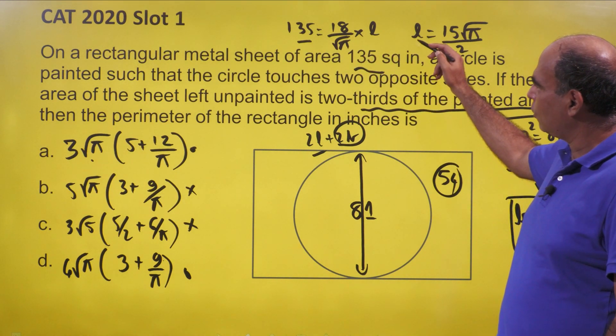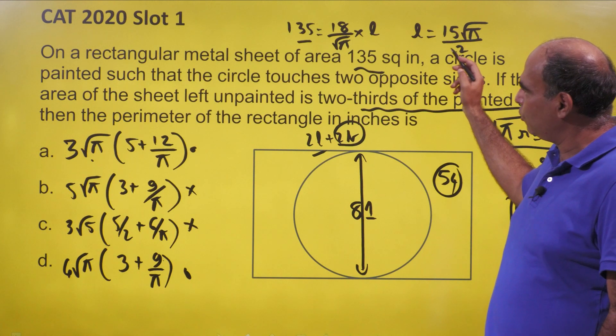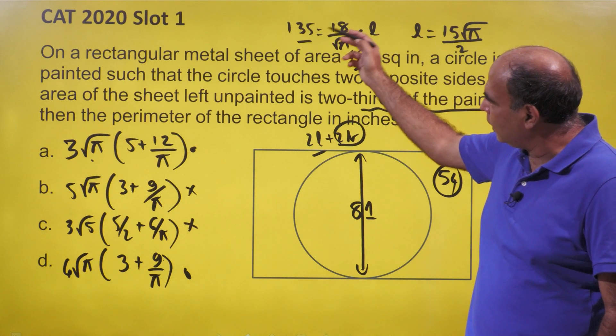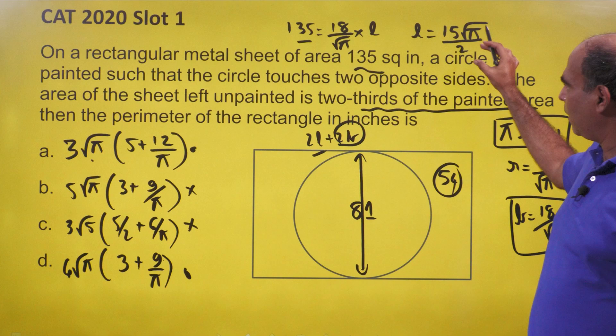So when I plug that in, the length of the rectangle comes out to be 15 root π by 2. I just have to take the root 2 there and the 18 here and divide by 9, so 15 root π by 2 is the length of the rectangle.